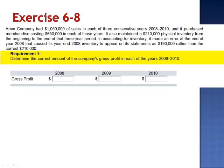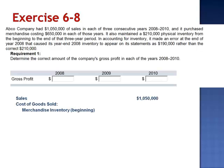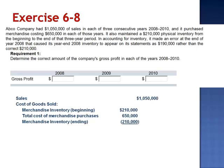We're first asked to determine the correct amount of the company's gross profit in each of the three years, 2008 through 2010. Gross profit is sales minus cost of goods sold. Sales is $1,050,000 per year. Cost of goods sold is calculated by taking the beginning inventory balance of $210,000, plus the total cost of merchandise purchases of $650,000, and subtracting the ending inventory balance, which is also $210,000. The correct amount of cost of goods sold should be $650,000, making gross profit $400,000. This should be the amount in each of the three years.